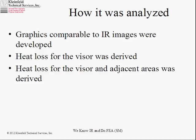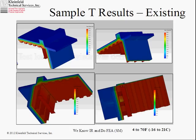Two steps in the analysis: one was to develop graphics that show you the temperatures or heat fluxes — much like our infrared images — and then numerically derive values for heat loss just from the visor and compare them across the two design cases, and also for the visor with its adjacent areas because those are affected by the changes in the visor.